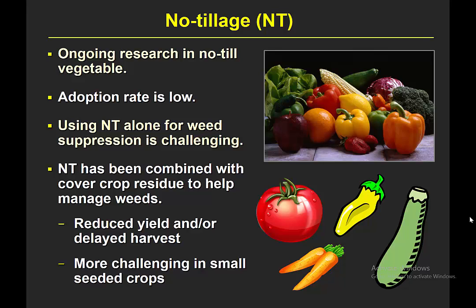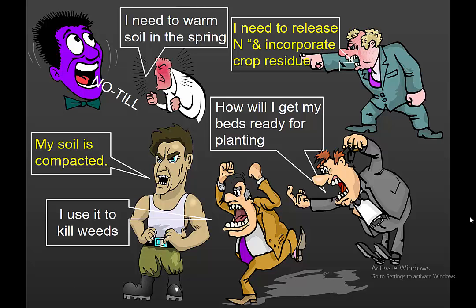Cool-weather-tolerant weeds may come up while warm-season crops struggle, leading to reduced yields — seen with tomatoes, peppers, and summer squash. Small-seeded vegetables like carrots especially don't do well in no-till situations. Farmers have many valid reasons not to adopt no-till: they want soil warmed in spring to hit early market prices; some need to till under legume cover crops to get the nutritional benefits; some work with raised beds, which aren't compatible with no-till; some have compacted soil they need to loosen; and of course, tillage is a valuable tool for managing weeds.